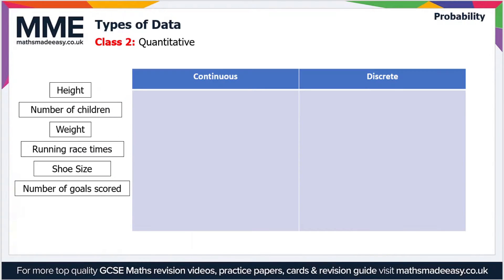Moving on to the second type: quantitative data. Quantitative data is any form of numerical data, and there are two subtypes we can divide it into — continuous and discrete. Continuous data can take any value, such as a decimal, with no fixed limit. Discrete data, on the other hand, can only take fixed values.